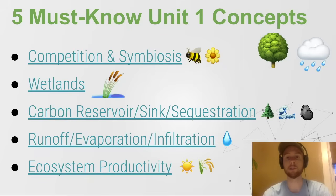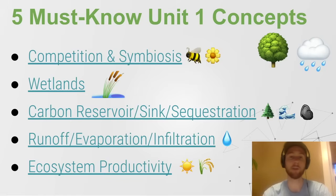Then we have ecosystem productivity. That is the total amount of energy coming into an ecosystem from the sun. The amount of energy harvested by the plant is referred to as gross primary productivity, but the plant has to use some of that energy for respiration. What's left available to the consumers that eat the plant is net primary productivity. Each of these key concepts is linked — those blue links will take you to another eight-to-ten-minute video. For each of the seven units, pick your weakest topic and watch the short video lecture on that topic.